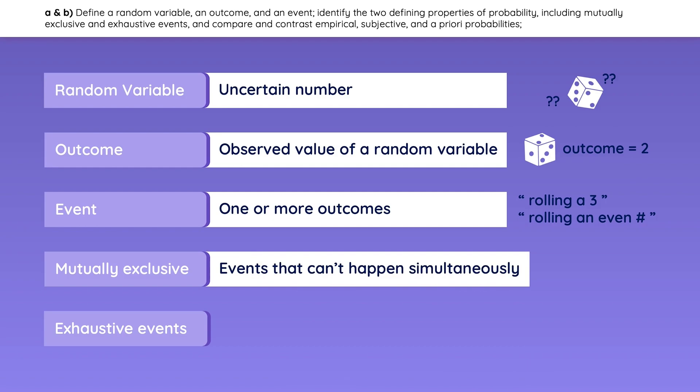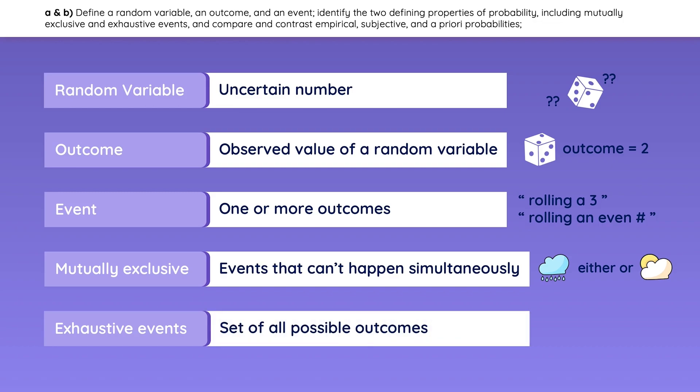Mutually exclusive events can't happen at the same time. It either rains or it doesn't rain, so the probability that they both happen is basically zero. Exhaustive events include all possible outcomes — it either rains or it doesn't; there is no third possible outcome.